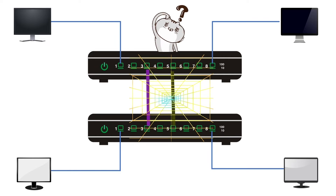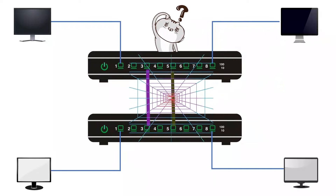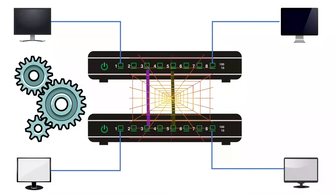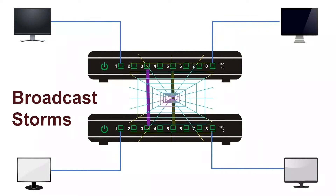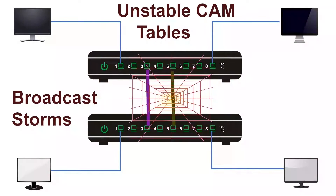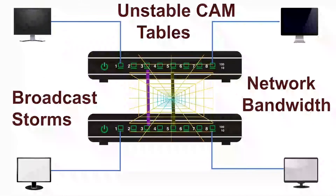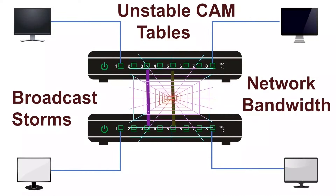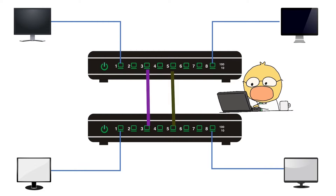A switching loop creates many performance-related issues. Among them, three are the main ones: broadcast storms, unstable CAM tables, and network bandwidth. To understand these issues in detail, we first need to understand how a switch learns MAC addresses and makes forwarding decisions.